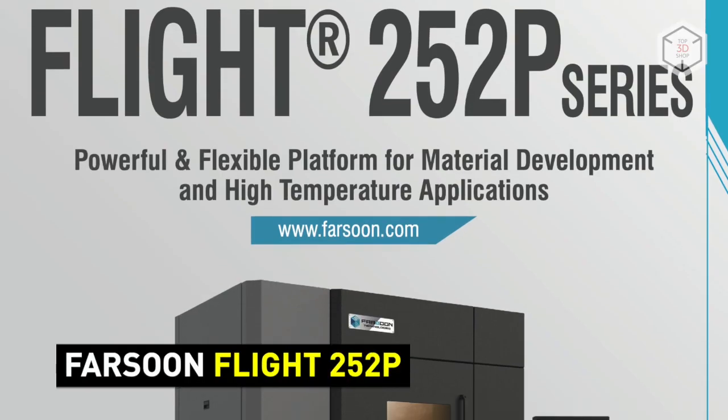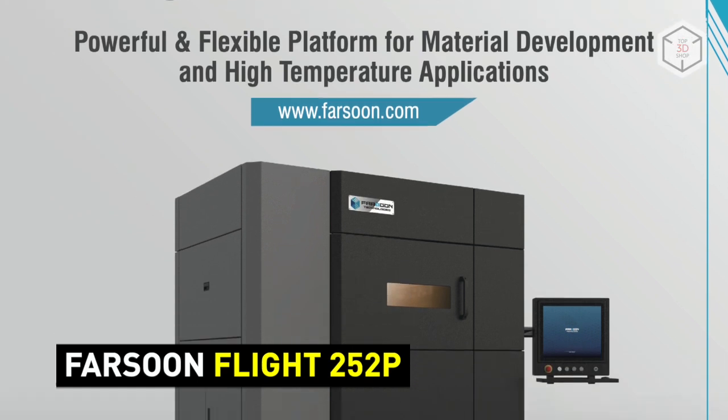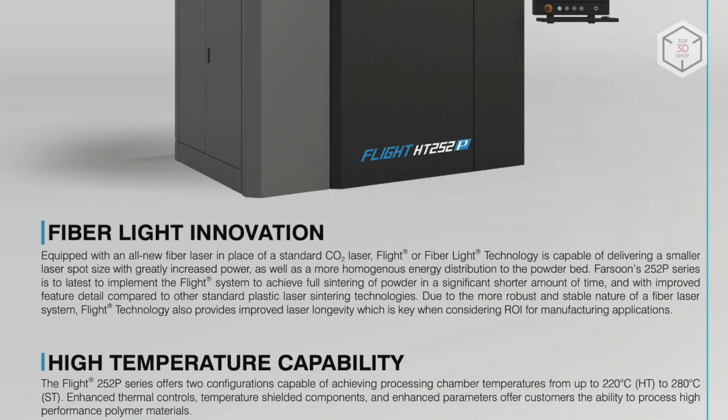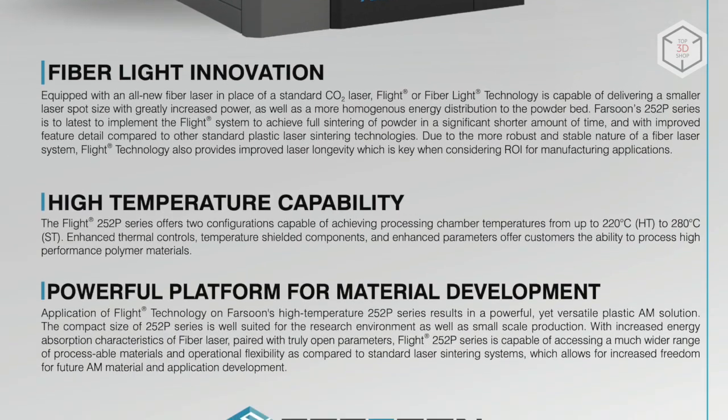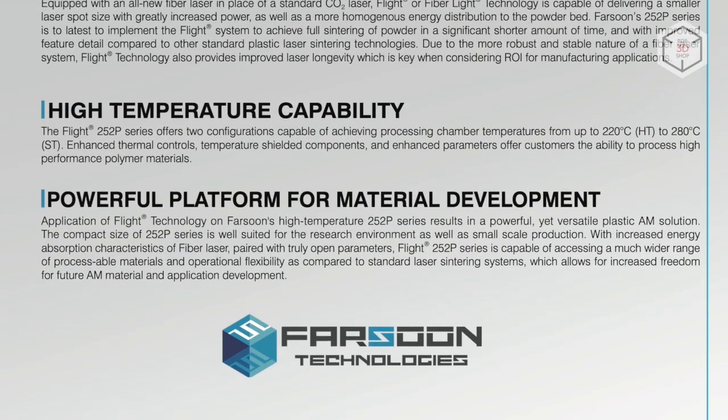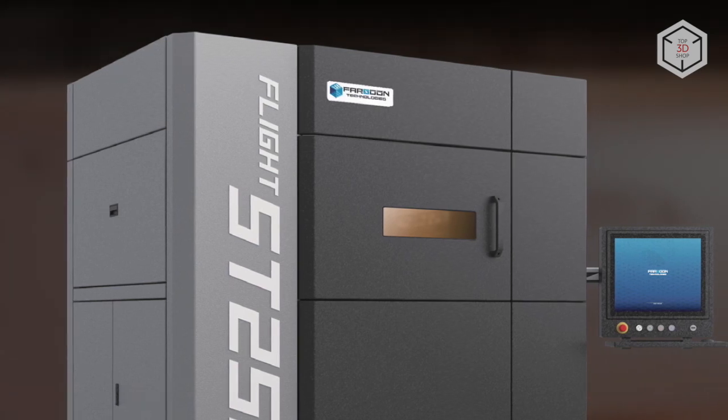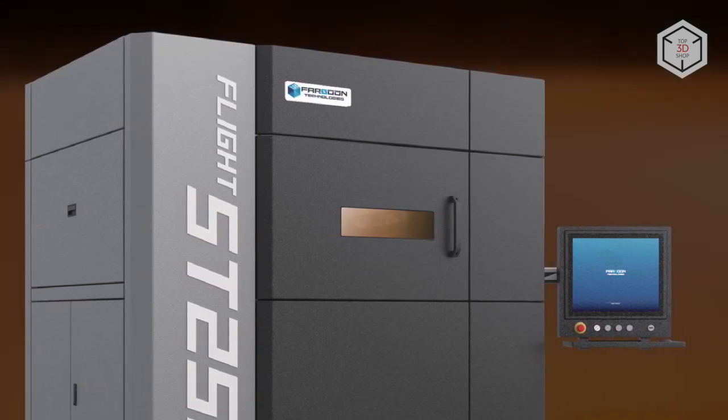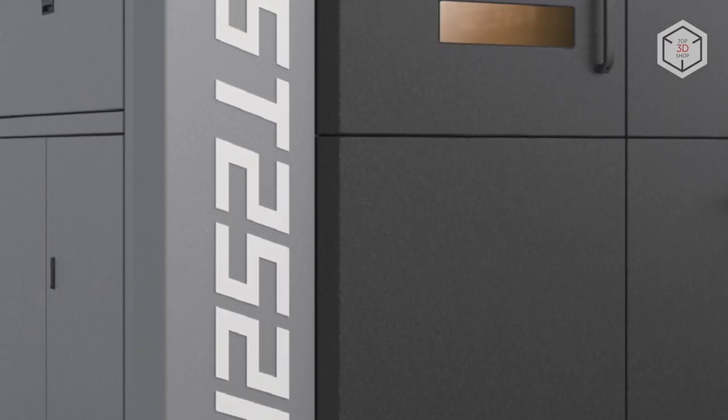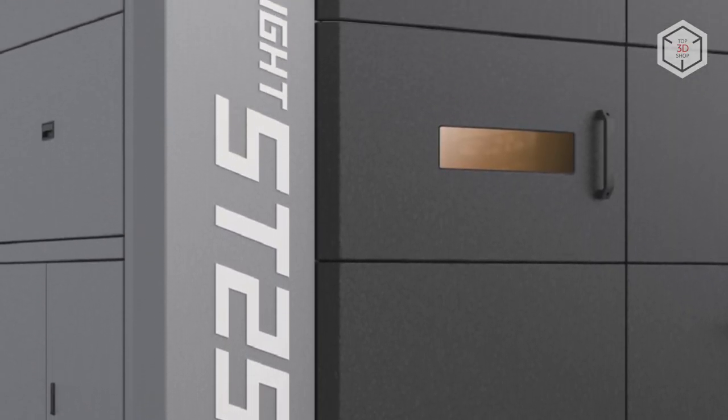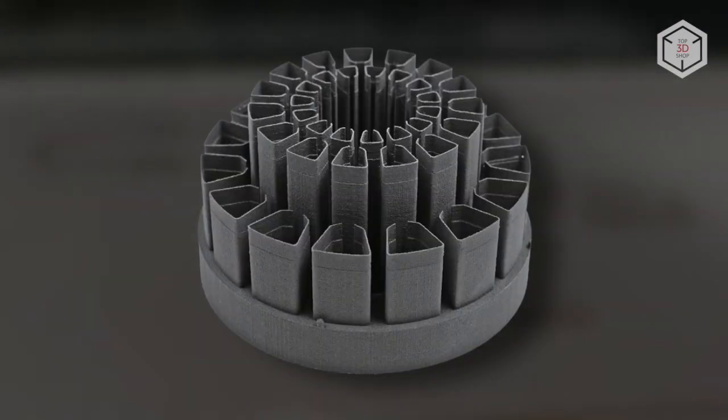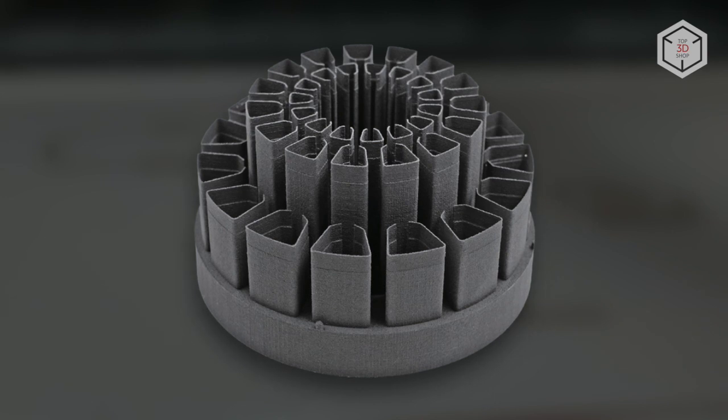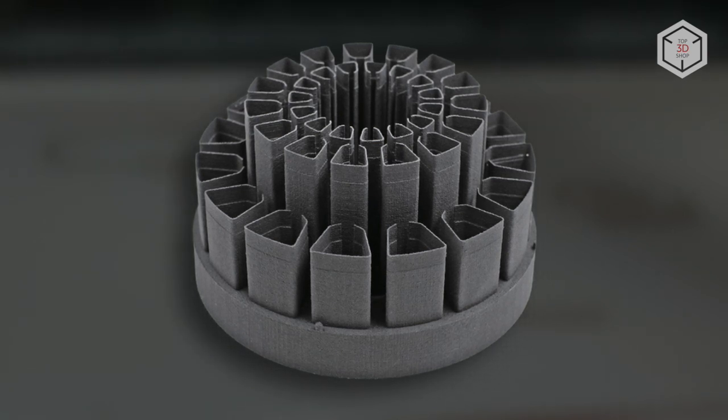The flight 252P series by Farsoon is based on the previous model featuring flight or fiber light technology that employs a new fiber 300 watt laser instead of a standard carbon dioxide one used in most SLS 3D printers. The new technology provides a smaller laser spot size with increased power and a more homogeneous energy distribution to the print bed. These improvements result in a faster print speed and a higher detail level compared to traditional SLS systems. The fiber laser is also more durable which contributes to the longevity of such machines.